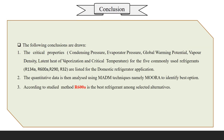The conclusion from this MOORA method: using various properties including condensing pressure, evaporator pressure, global warming potential, vapor density, latent heat of vaporization, and critical temperature for these four refrigerants.